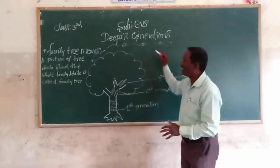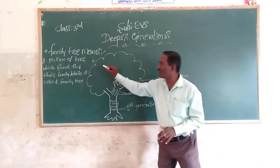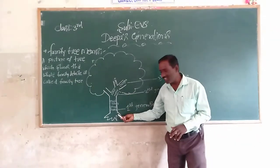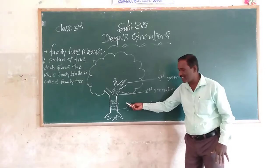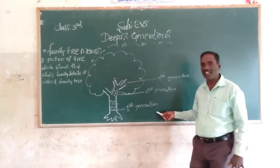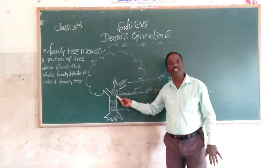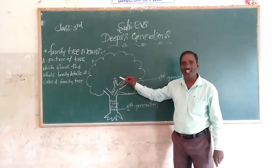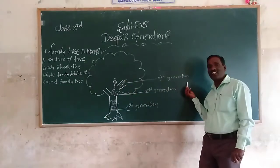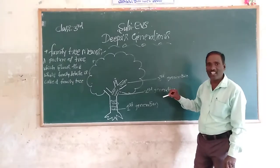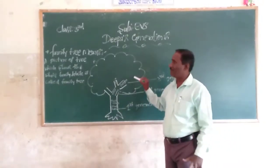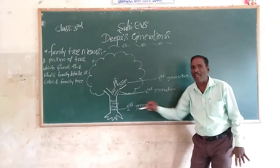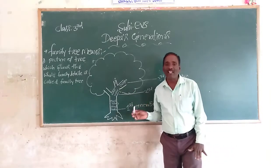A picture of a tree which shows the whole family. For example, grandfather and grandmother in the first generation. Our father and mother in the second generation. And their children is the third generation. It is called generations. Family tree means a picture of a tree which shows the whole family details — it is called family tree.